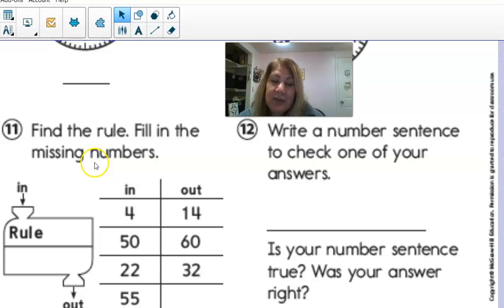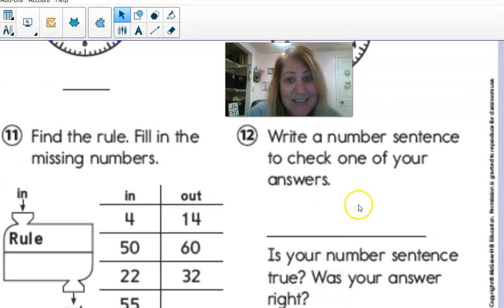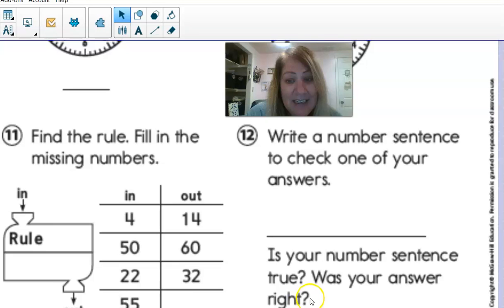Number twelve has to do with number eleven. It says, write a number sentence to check one of your answers. So that would be four. Whatever happens in here is the same as fourteen. So it's going to be a number sentence. So is your number sentence true? If your number sentence is true, then you know your answer was right. And then it asks you, is your number sentence true? And the next question is, was your answer right? So if your number sentence is true, your answer should be right.